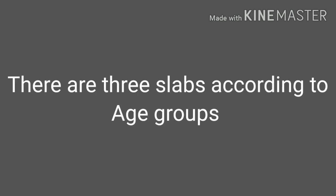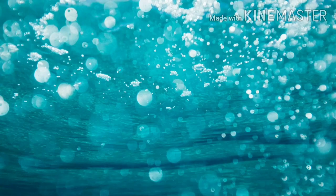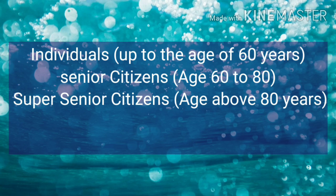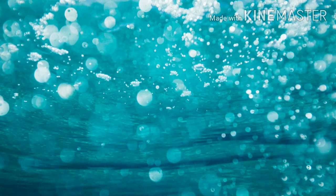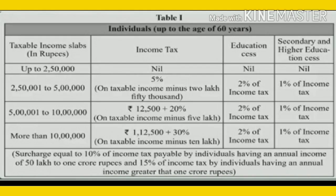There are three slabs according to the age group. The first one: individuals up to the age of 60 years — for this age group there is a specific table. Next: senior citizens, age 60 to 80 — for this age group there is another table. Third: super senior citizens, age above 80 years — for this age group there is yet another table.